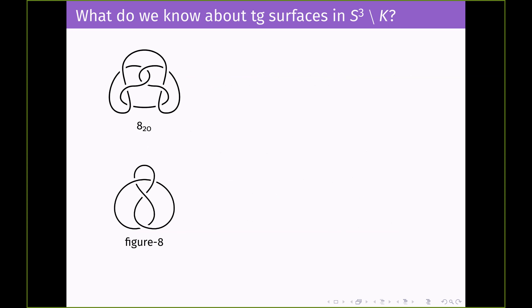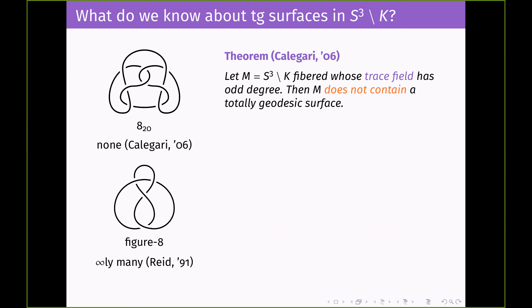Here is a summary of what we know about totally geodesic surfaces in knot complements thus far. We have the knot 8₂₀ and the figure-eight knot. In 2006, Calegari was able to show that the knot 8₂₀ has no totally geodesic surfaces whatsoever. That's very contrasted to the statement by Alan Reid in 1991 that the figure-eight knot complement has infinitely many totally geodesic surfaces. The statement about 8₂₀ is actually more general: Calegari shows that if you have a fibered knot complement — meaning the knot complement can be written as a direct product — and the trace field has odd degree, then your three-manifold doesn't have any totally geodesic surfaces whatsoever.